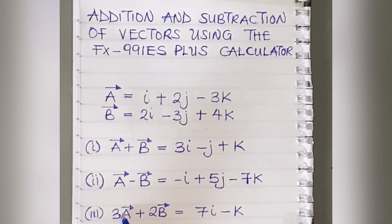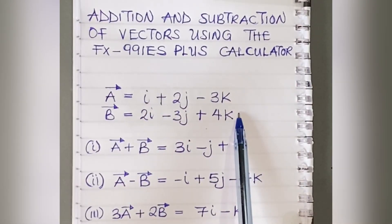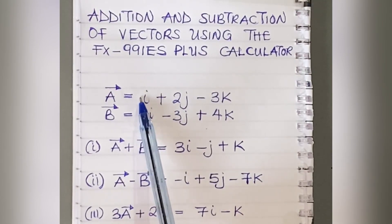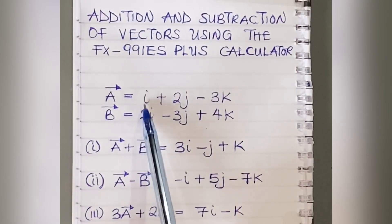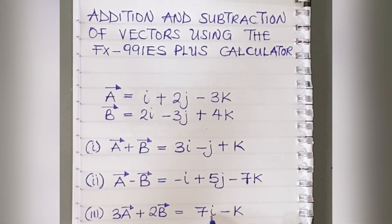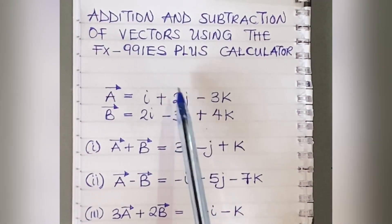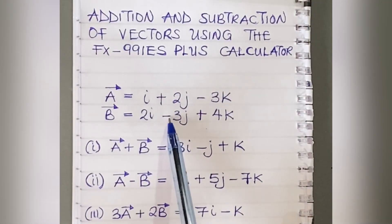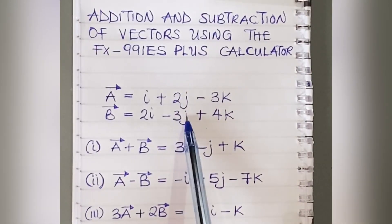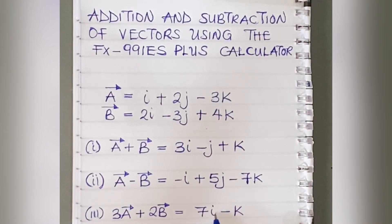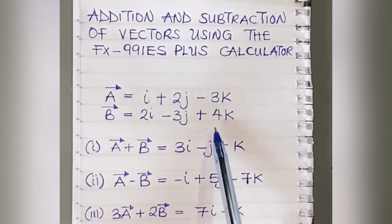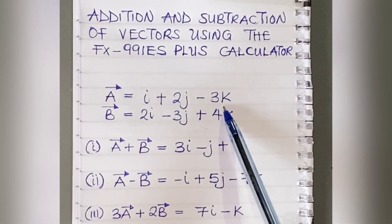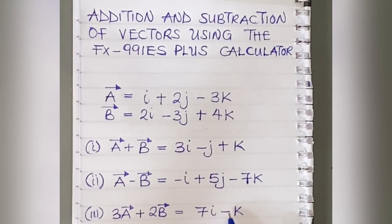For 3A plus 2B, multiply A by 3 and B by 2 then add them. For i: 3 times 1 plus 2 times 2 gives 3 plus 4 equals 7i. For j: 3 times 2 plus 2 times minus 3 gives 6 minus 6 equals zero, so no j term. For k: 3 times minus 3 plus 2 times 4 gives minus 9 plus 8 equals minus k. So 3A plus 2B equals 7i minus k.